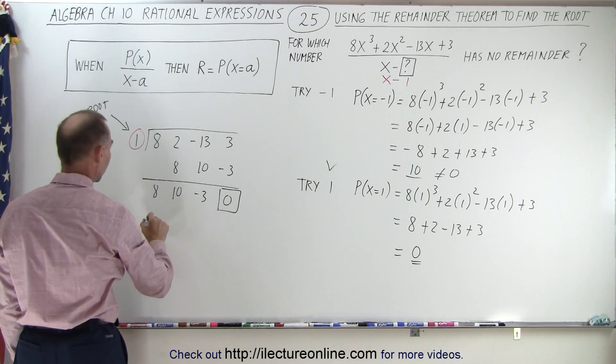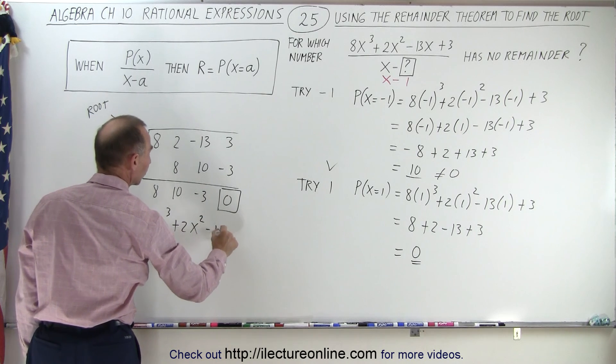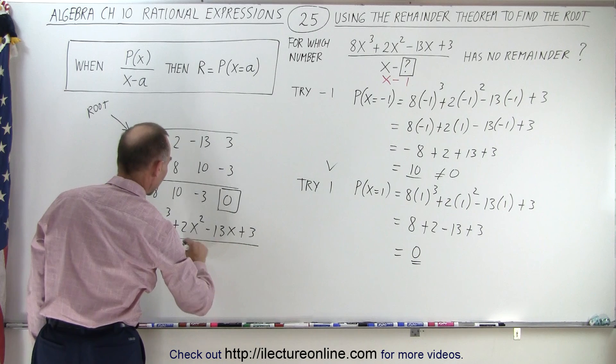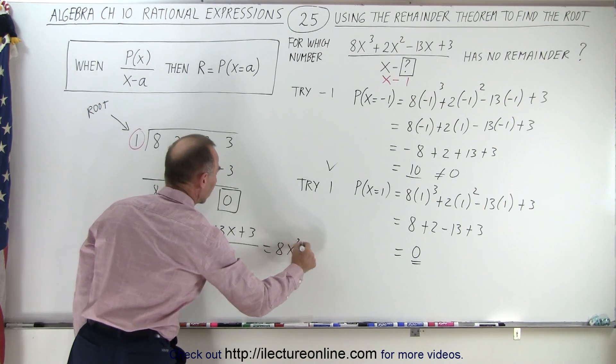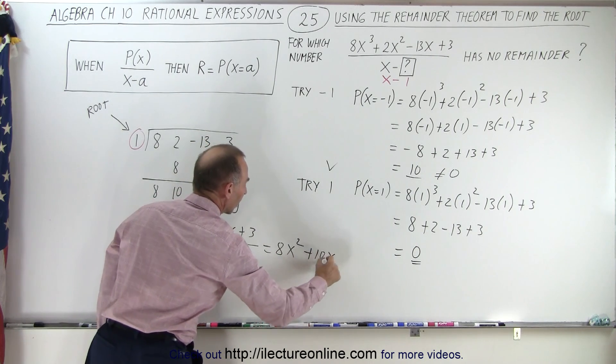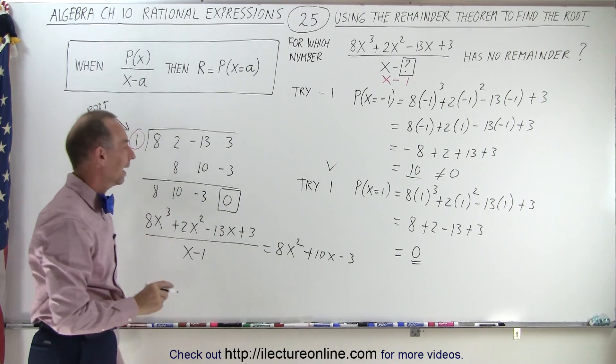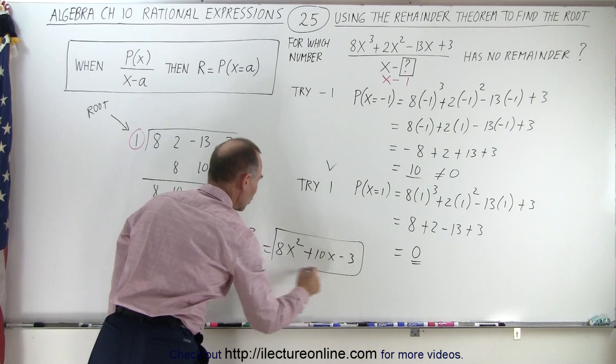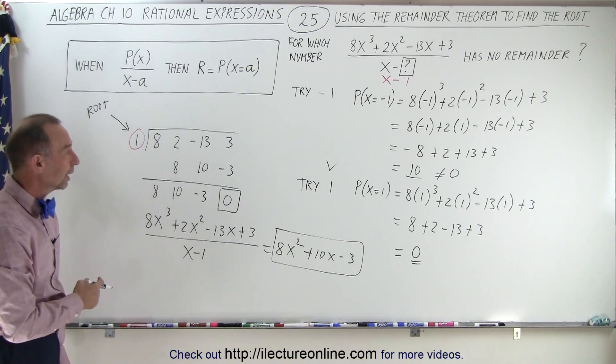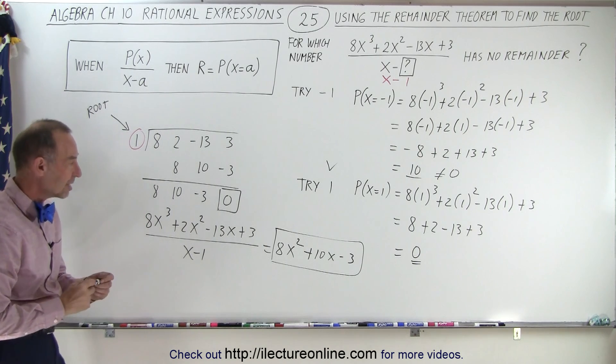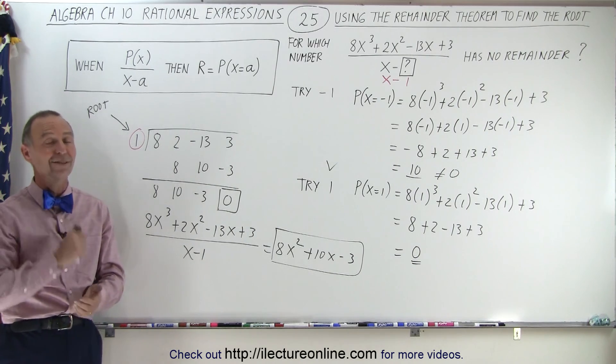Which means we can then conclude that 8x cubed plus 2x squared minus 13x plus 3 divided by x minus 1 is equal to 8x squared plus 10x minus 3 with a remainder of 0 over x minus 1. And so that's how we can use the remainder theorem to find the root of the polynomial in the numerator. And with synthetic division, we can show that, yes indeed, we can then divide x minus 1 perfectly into the numerator. And that is how it's done.